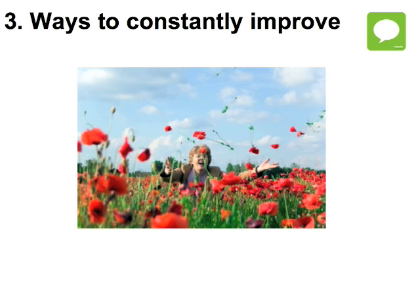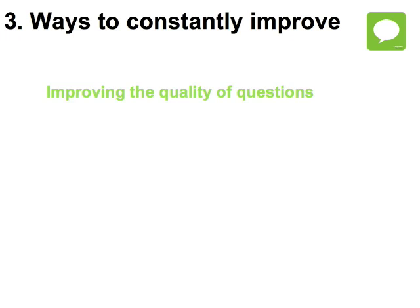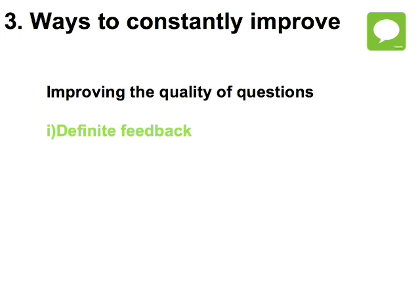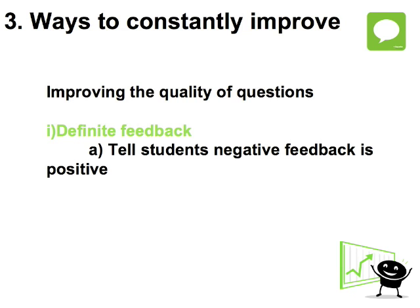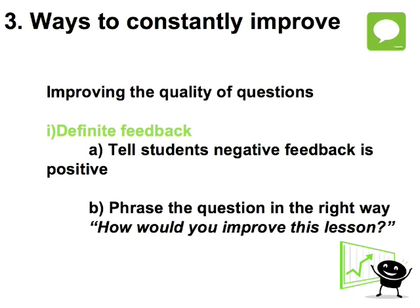It's a fascinating question to find out how someone can constantly improve as a teacher. Here are some ideas about how you might be able to improve a little bit every lesson. Definite feedback: the first way is to get at least one criticism per class. This is a difficult issue because students loathe to criticise people, especially their tutors. A way around this is by putting a positive light on the question, like asking: how would you improve one aspect of this lesson?